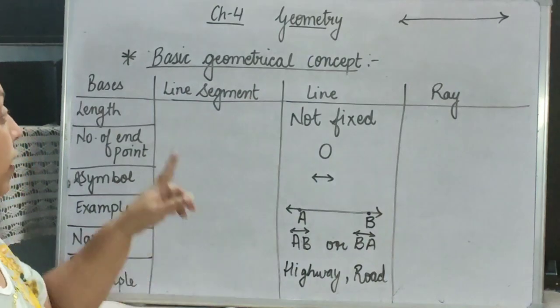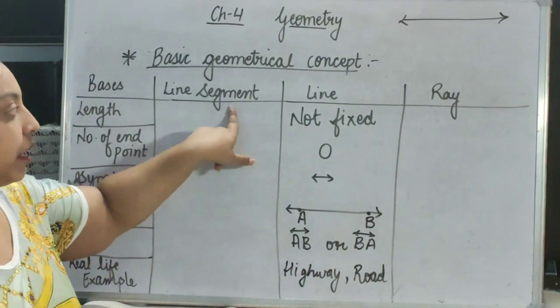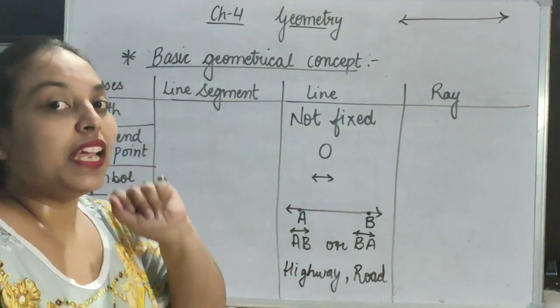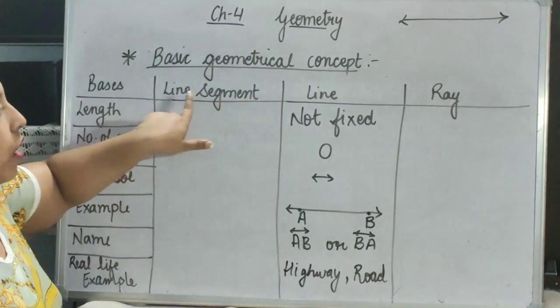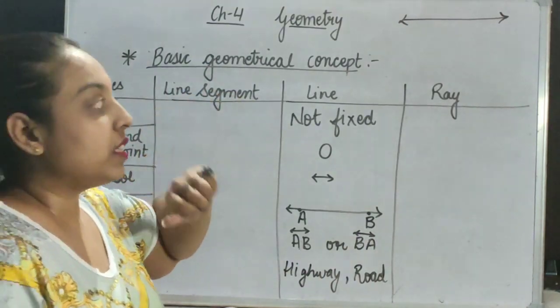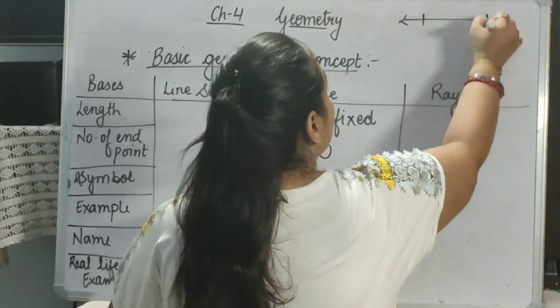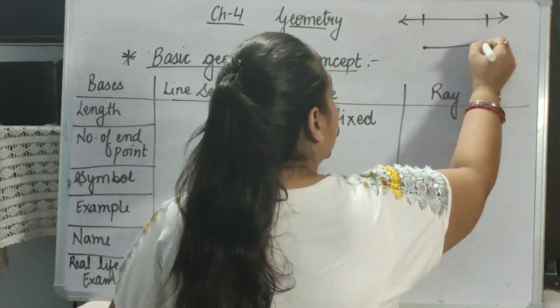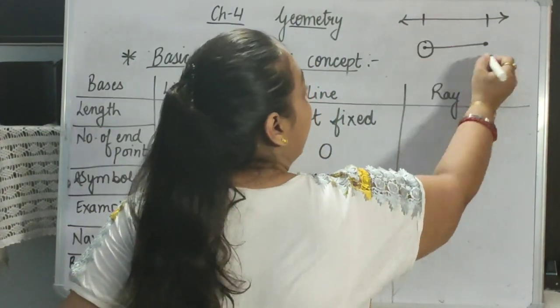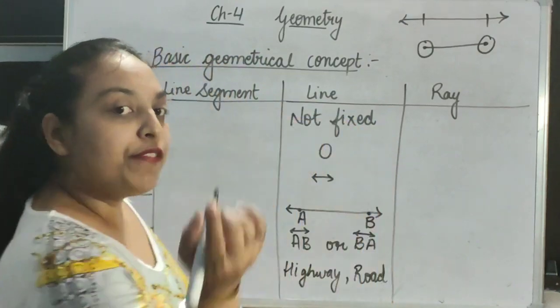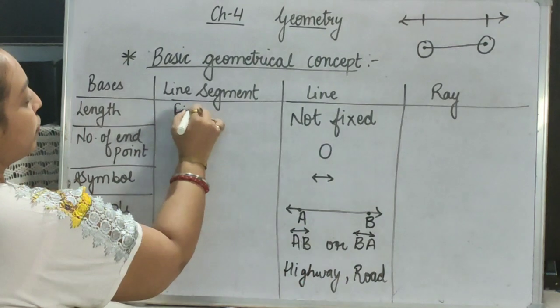Now, we are moving forward to line segment. For learning about this, first we need to know the meaning of segment. Segment means a part. So, it means line segment is a part of line. How? See, a part of line means when I am taking only this part of a line. So, I will draw only this part. It means I have a starting point and the ending point. If I have the starting or ending point, so its length is fixed.